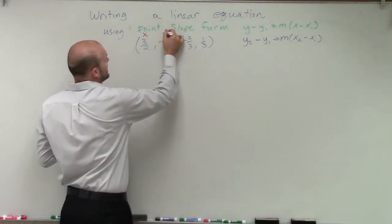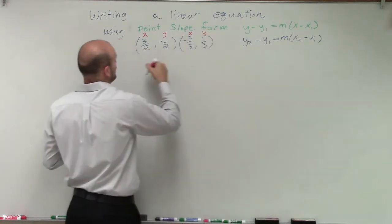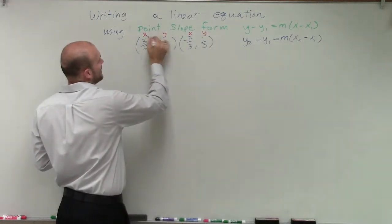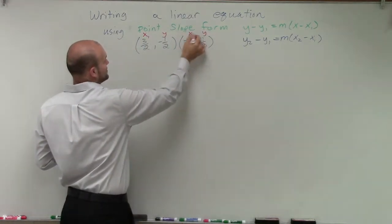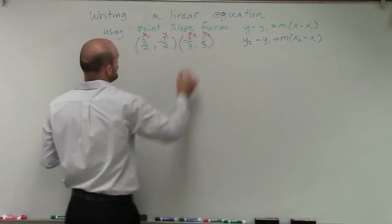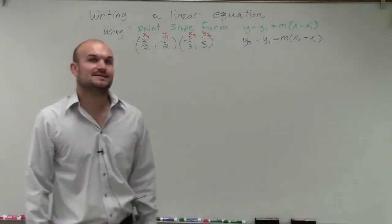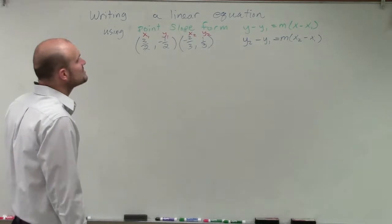We can at least label them as x and y and x and y, where our x's is going to be x1, x2, y1, y2. Alright, so now the next thing we need to do is we need to determine what the slope is.